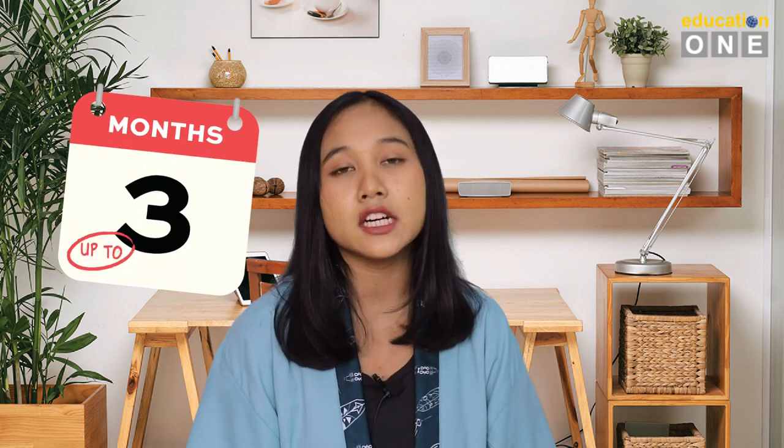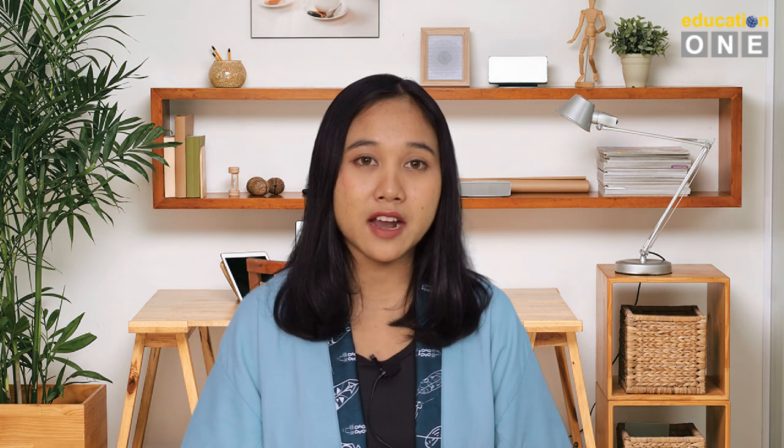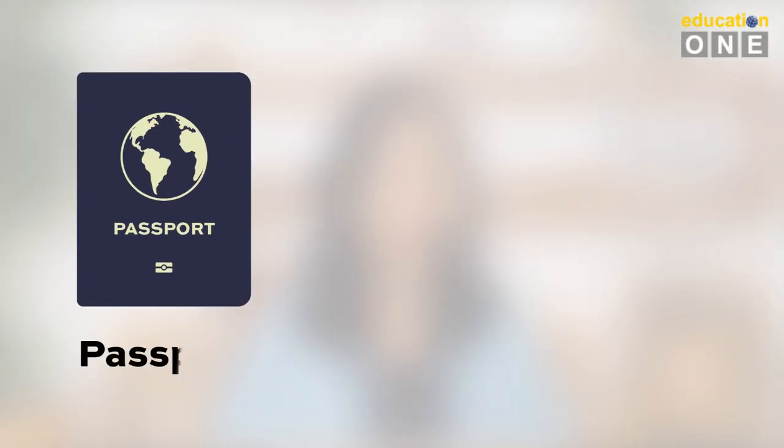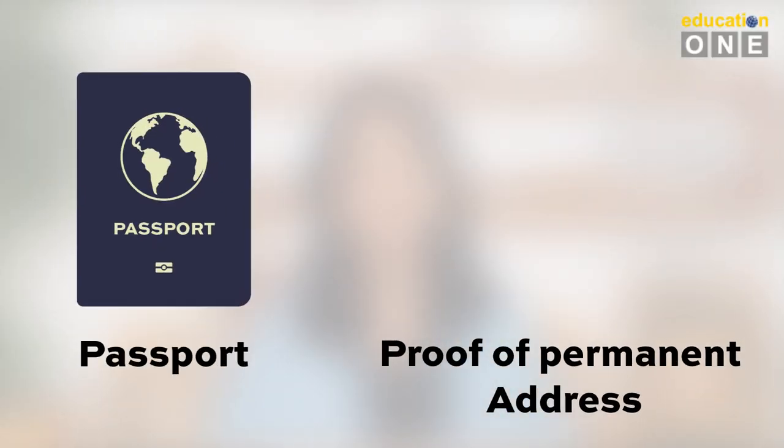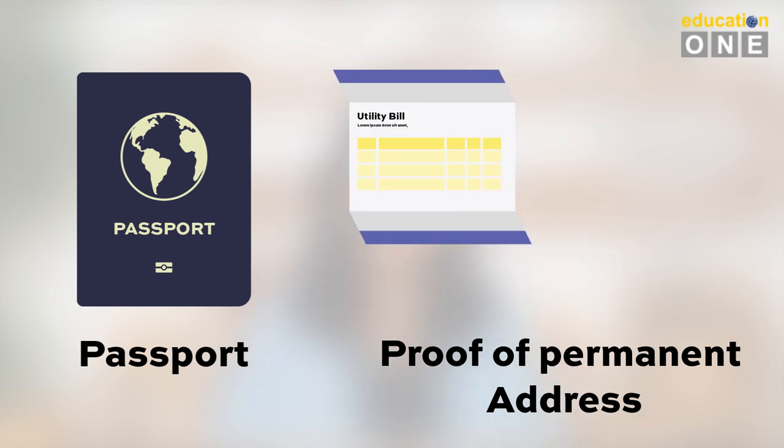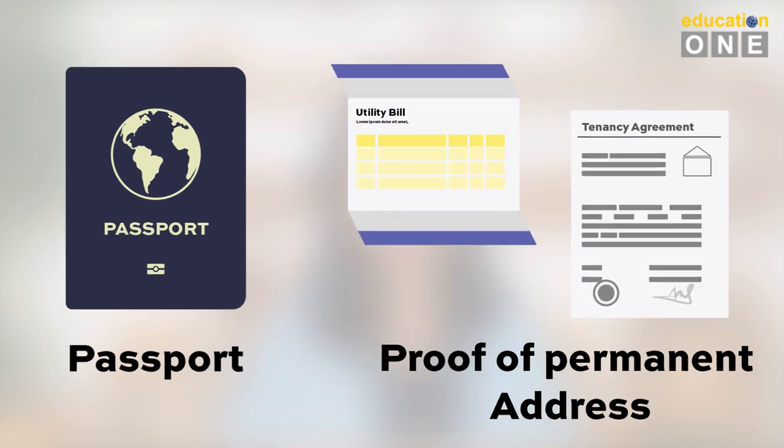You can even set up your student account online for up to three months before arriving in Australia. Just fill out the application form on your chosen bank's website and deposit money. Once you've received your new account information, upon arrival you'll need to book an appointment at your local branch to prove your identity and access your money. You'll need to bring your passport and proof of a permanent address in Australia, like a utility bill or tenancy agreement.